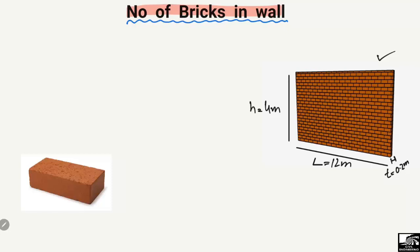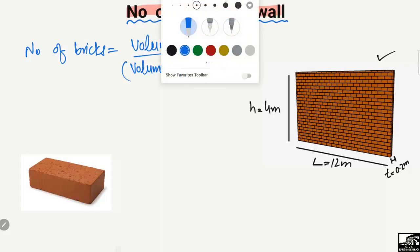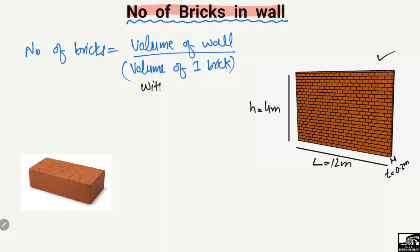The formula for finding out the number of bricks in a wall is: number of bricks equals the volume of the wall divided by the volume of one brick with mortar. It should be kept in mind that it must be with mortar.